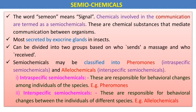Semiochemicals is a Greek word meaning signal. The chemical involved in communication is termed a semiochemical. It is secreted by a special gland — the exocrine glands. It can be divided into two groups based on who sends a message and who receives the message, classified into two major categories: pheromones and allelochemicals.